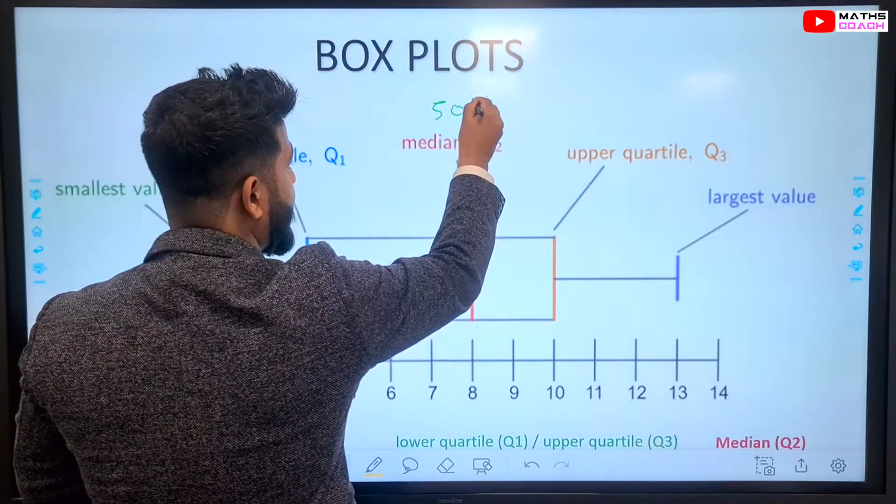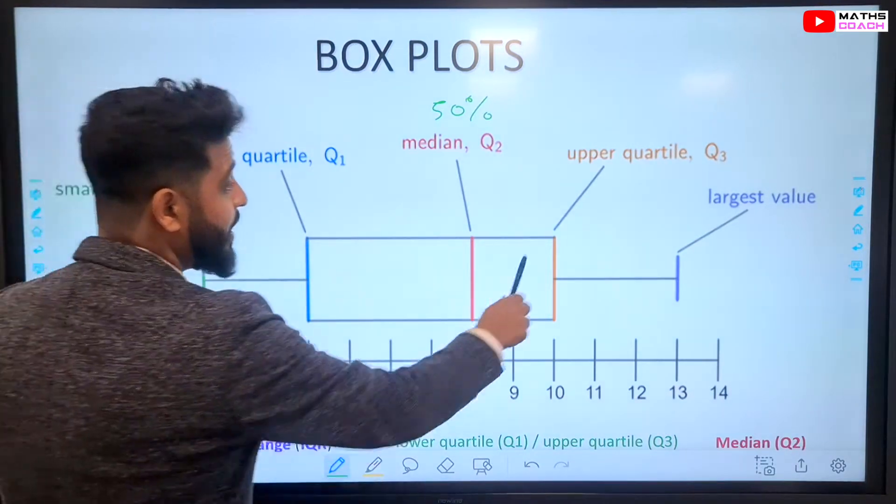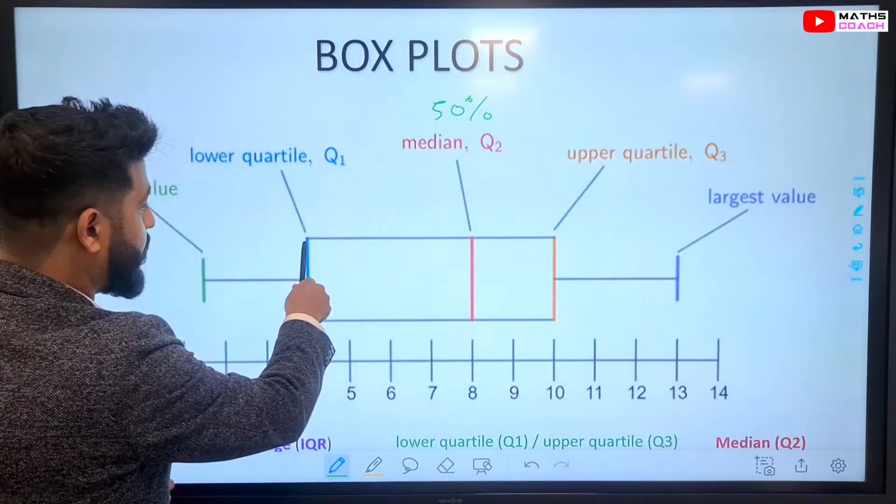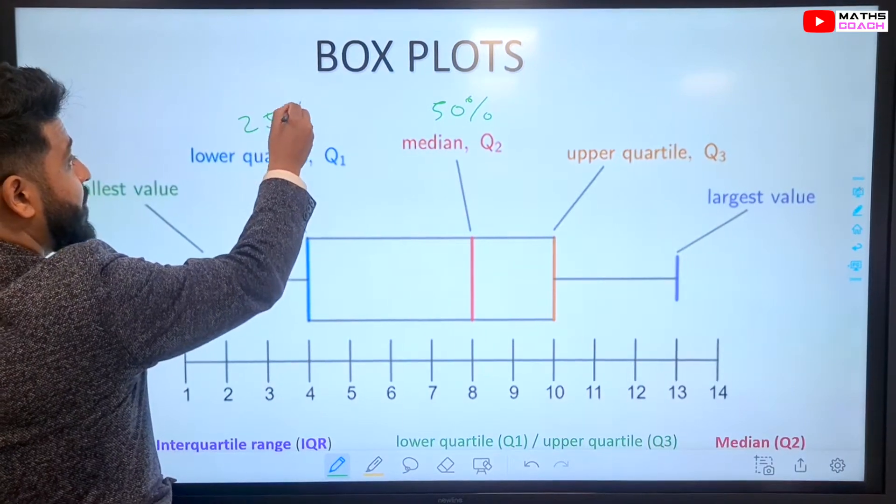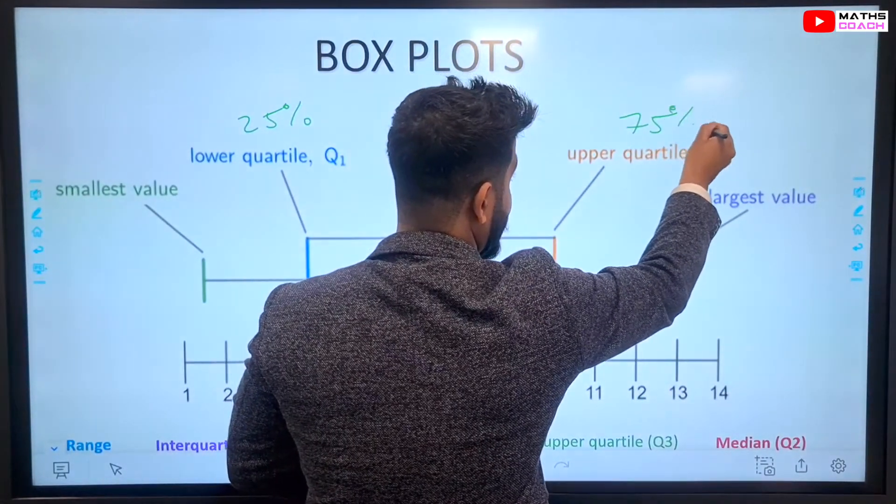This is representative of our 50% mark, or halfway mark. Then you've got the upper quartile and the lower quartile. The lower quartile is our 25% mark, and our upper quartile is our 75% mark.